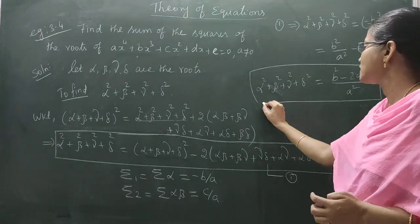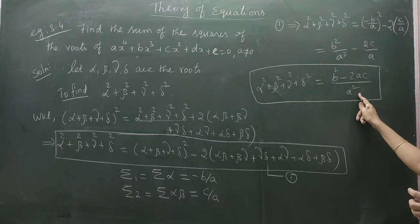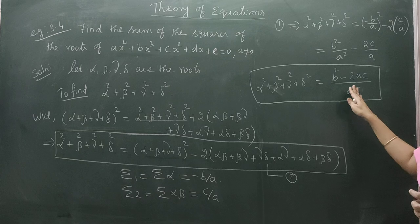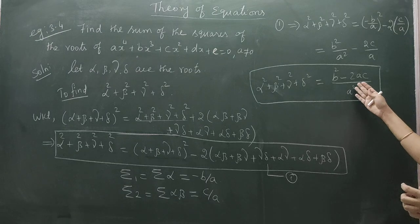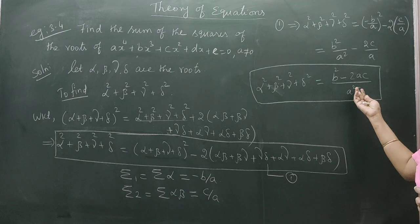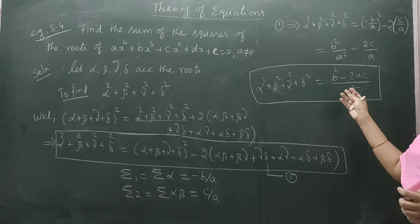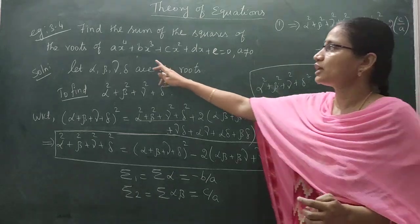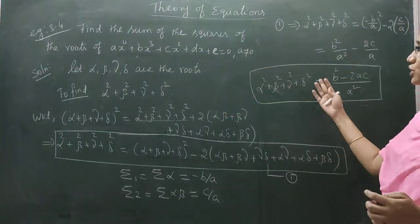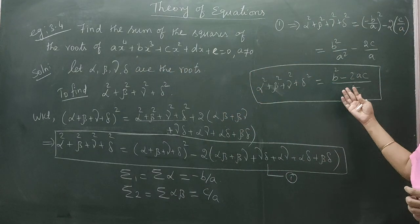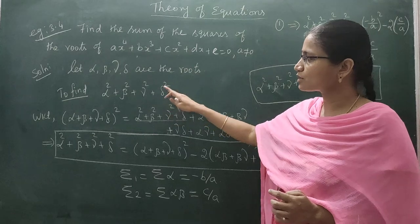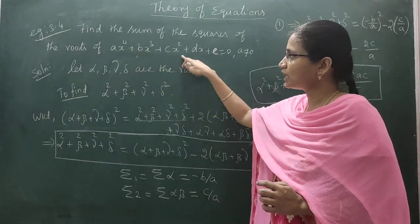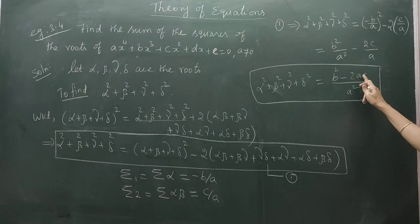So the sum of the squares of the roots is (B² - 2AC) / A². Just memorize this result as a formula. If coefficients are given instead of A, B, C, you can directly substitute the values. In exercise 3.1 the 5th problem is similar. Always remember: the sum of squares of the roots of a degree-4 polynomial equation is (B² - 2AC) / A². Thank you.